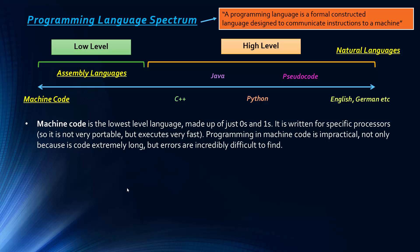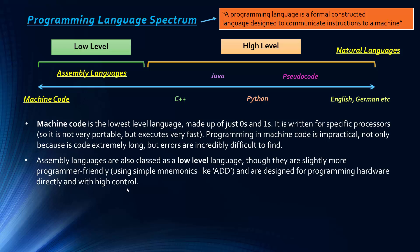Programming in machine code would be very impractical. Code becomes very long — just as decimal numbers become a lot longer when represented in binary, anything in binary is going to be longer. Trying to find errors among zeros and ones is going to be incredibly difficult, so it's very difficult to program in.